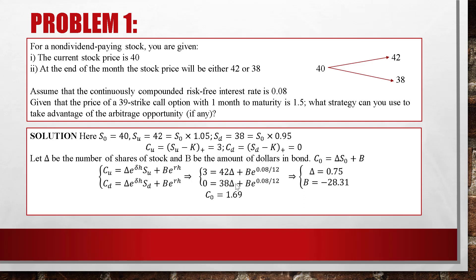To make a profit from the arbitrage opportunity, follow one rule: buy low, sell high. The market price is 1.5, so you buy the call option at 1.5. In the replicating portfolio, delta = 0.75 (positive) means you sell 0.75 shares of stock, and B = -28.31 (negative cost) means you have $28.31 cash, so you lend it. Strategy: buy the call, short sell 0.75 shares of stock, and lend $28.31 cash.